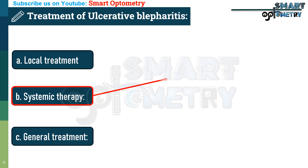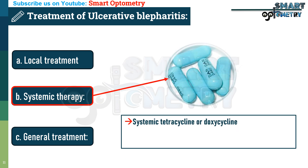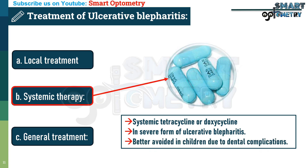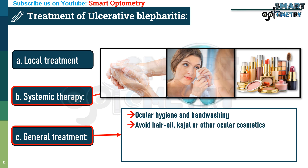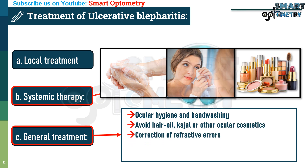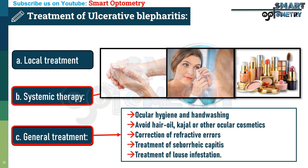Systemic therapy: systemic tetracycline or doxycycline for 2 weeks is useful in severe ulcerative blepharitis, though it is best avoided in children due to dental complications. General treatment includes ocular hygiene and hand washing, avoiding hair oil and ocular cosmetics, correction of refractive errors, treatment of seborrheic capitis with anti-dandruff shampoo, and treatment of louse infestation.